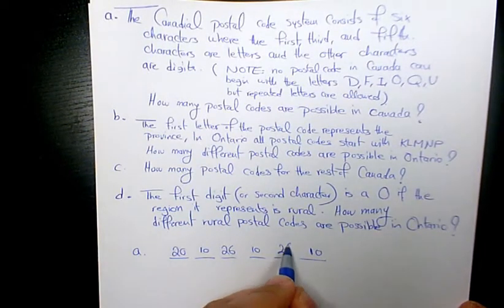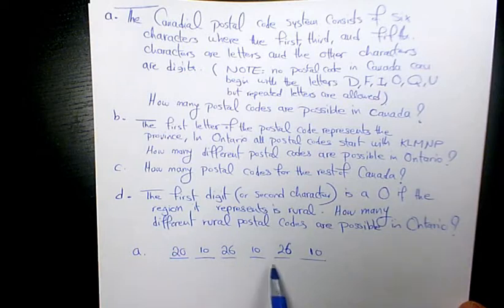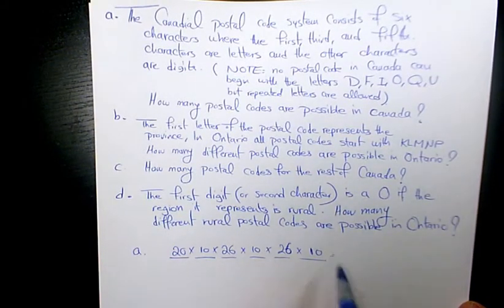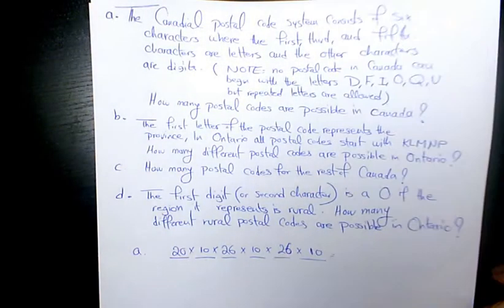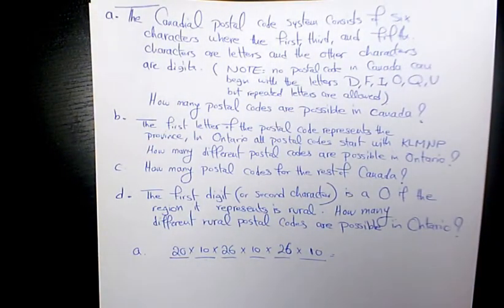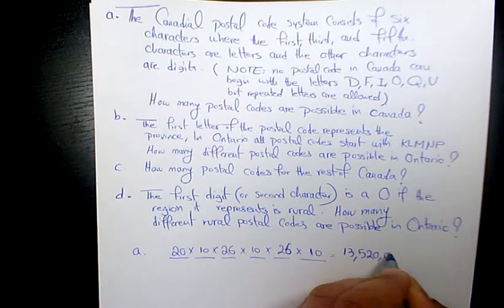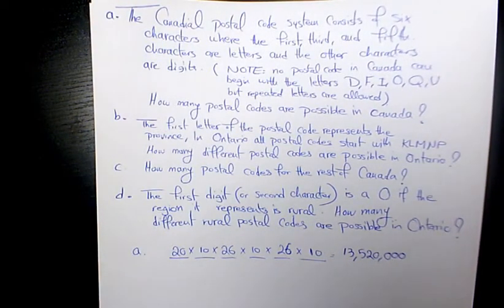So we need to multiply all these numbers so it's going to be 20 times 10 times 26 times 10 times 26 times 10. That will be 13,520,000 is the number of available postal codes in Canada.